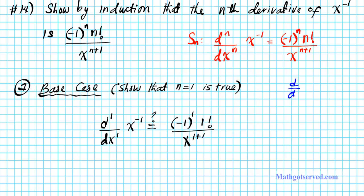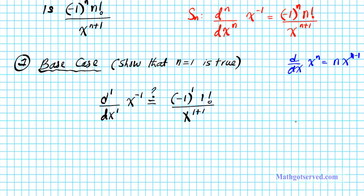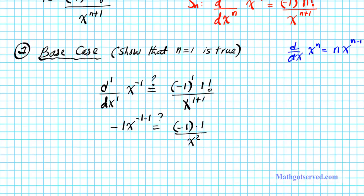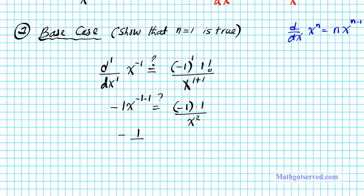Remember that d/dx of x to the n is equal to n times x to the n minus 1. That is the basic formula from calculus. So we are going to find the derivative of the left side and simplify the right side. The derivative of x to the negative 1 is negative 1 times x to the negative 1 minus 1. Is that equal to negative 1 to the first power, which is negative 1, times 1 factorial which is 1, over x squared? Simplifying the left side gives negative 1 over x squared. Simplifying the right side also gives negative 1 over x squared. They are equal, so our base case checks out.